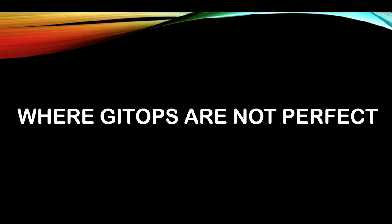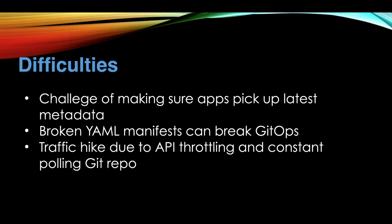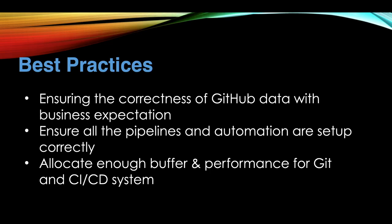GitOps is not always perfect, of course. Some challenges around GitOps include ensuring that apps pick up the latest metadata, broken YAML manifests can break GitOps, traffic spikes to the Git API because multiple operations are involved, and constant polling of the Git repo. Best practices include ensuring the correctness of GitOps data aligns with business expectations and ensuring all pipelines and automations are correctly sized with adequate performance for the Git and CI/CD systems.